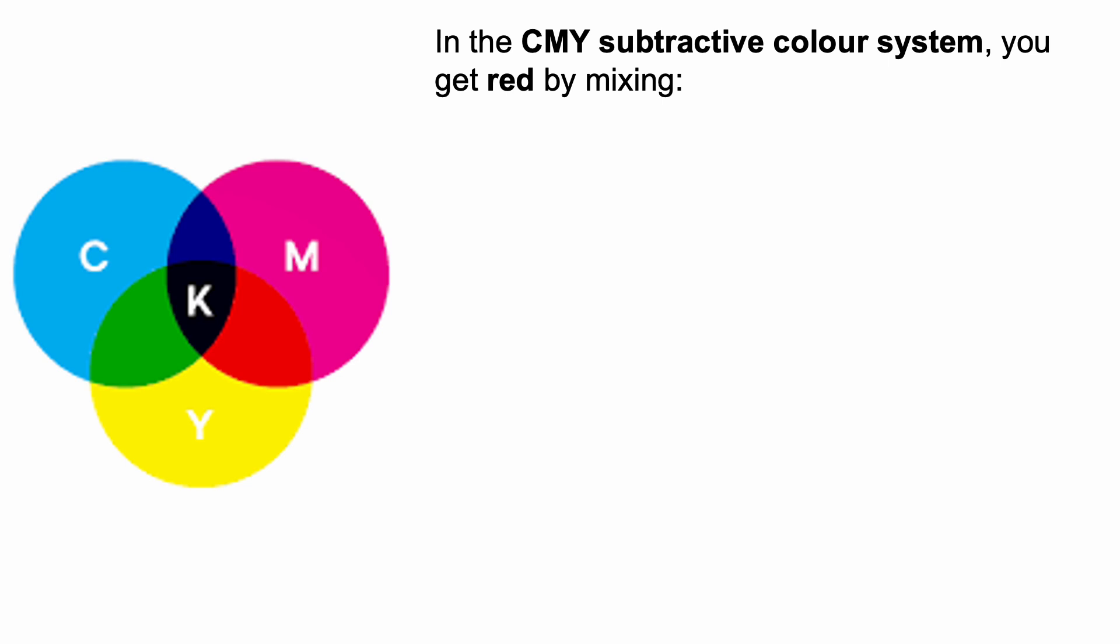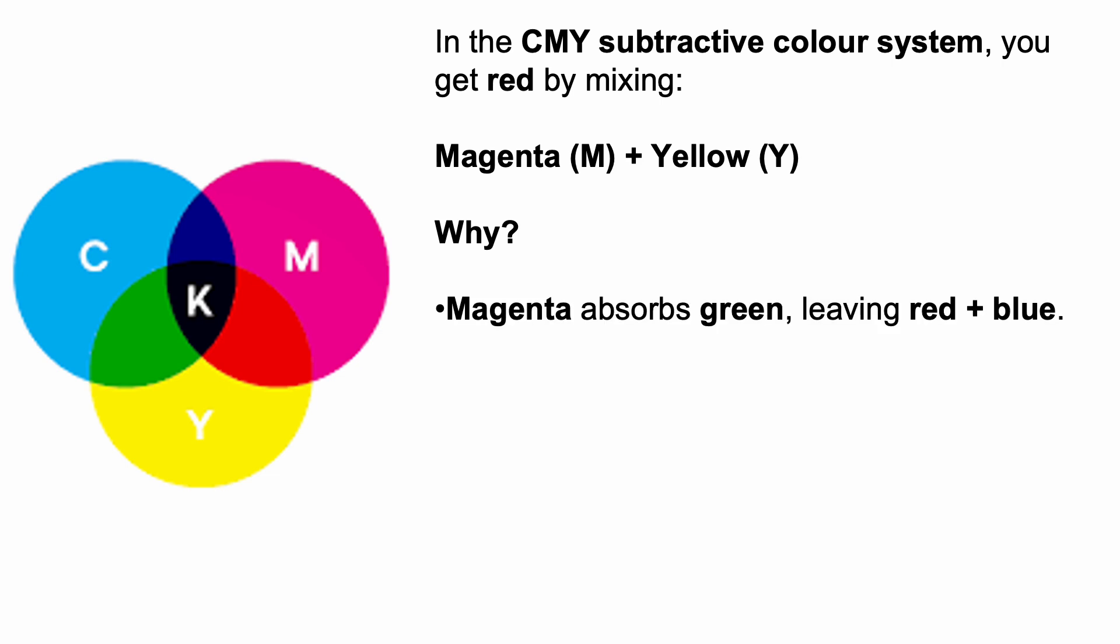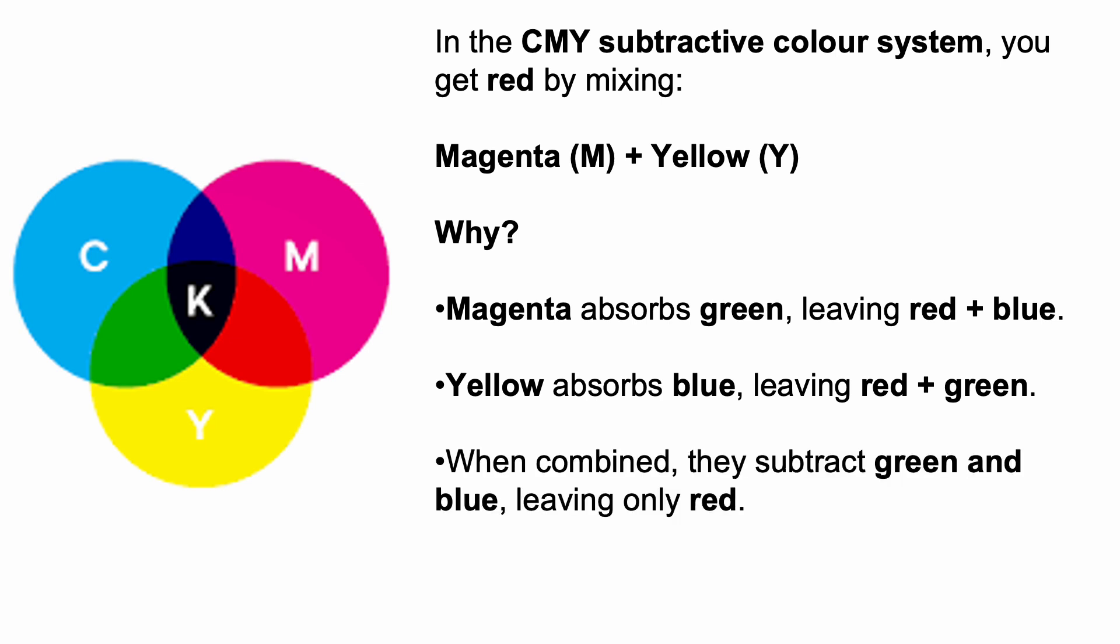How do you get red? You get red by mixing magenta and yellow. Why? Magenta absorbs green, leaving red plus blue. Yellow absorbs blue, leaving red plus green. So when combined, they subtract green and blue, leaving only red. Red is magenta plus yellow.